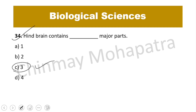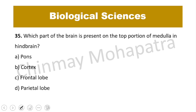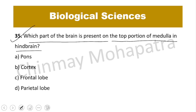Those three parts are medulla oblongata, pons varolii, and cerebellum — all present in the hindbrain. Question number 35: Which part of the brain is present on the top portion of the medulla in the hindbrain? The right answer is pons varolii.